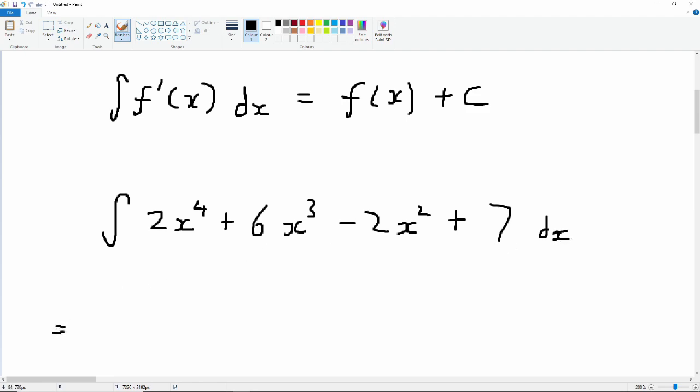Okay, so the reason I'll put such a long thing is to give us experience in finding the integral. So just like with the derivative, we can take each term separately. So 2x to the power of 4. So our algorithm is that we add 1 to the index, and then we divide by the new index.